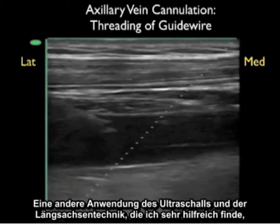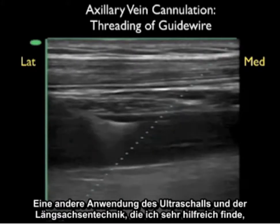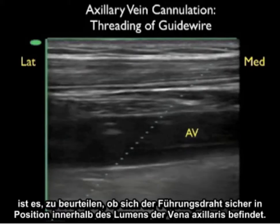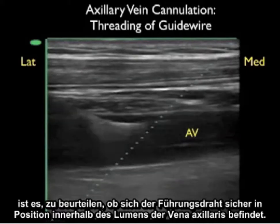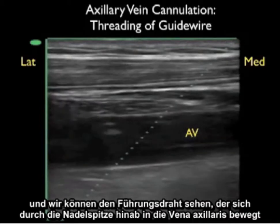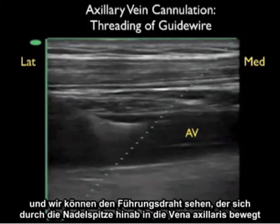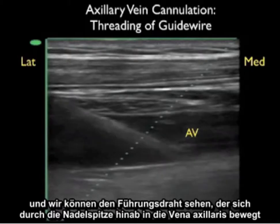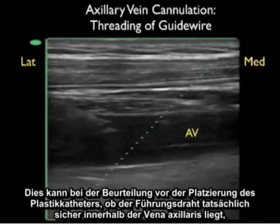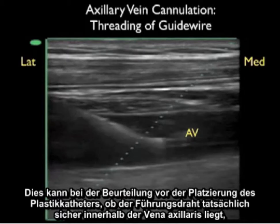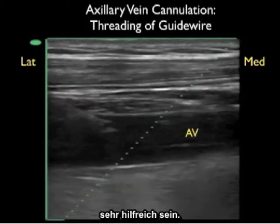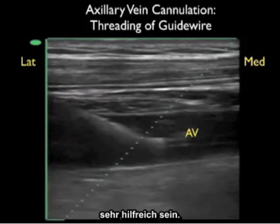Another very helpful use of ultrasound in long axis technique is to confirm that the guide wire is safely positioned within the lumen of the axillary vein. We can see the needle coming down from left to right and the guide wire passing through the needle tip, moving down the axillary vein toward the superior vena cava. This is very helpful in verifying that the guide wire is safely within the axillary vein prior to placement of the plastic catheter.